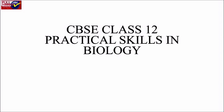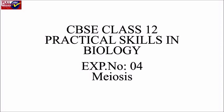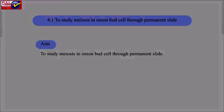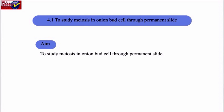CBSE Class 12 practical skill in biology, experiment number 4: Meiosis. Experiment 4.1 aims to study meiosis in onion bud cells through permanent slide. The aim is to study meiosis in onion bud cells through permanent slide.